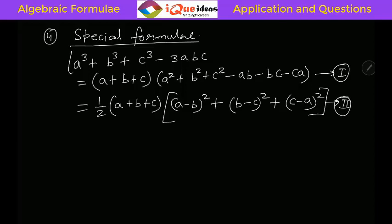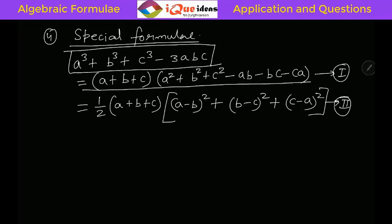So please understand that the expression a cube plus b cube plus c cube minus 3abc can be factorized in two ways. One is a plus b plus c into a square plus b square plus c square minus ab minus bc minus ca, and the other is half of a plus b plus c into a minus b whole square plus b minus c whole square plus c minus a whole square.